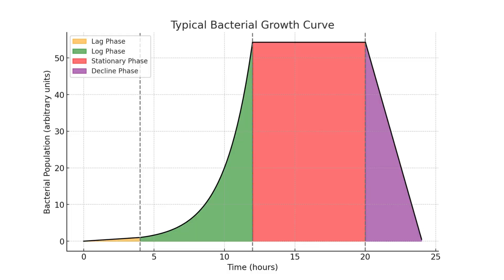Four distinct phases are recognized in the bacterial growth curve. Number 1: Lag phase — it is a phase of no growth; bacteria prepare themselves for division. Number 2: Log phase — it is a phase of rapid growth, where bacteria divide at an exponential rate.